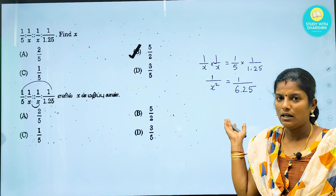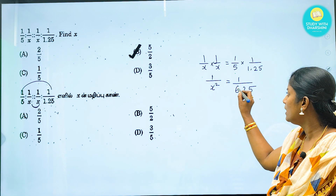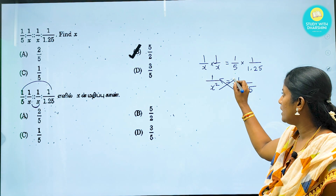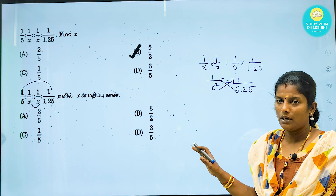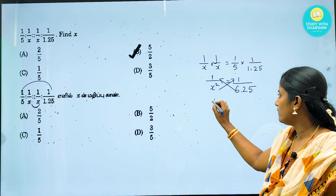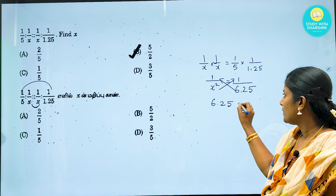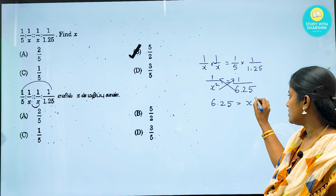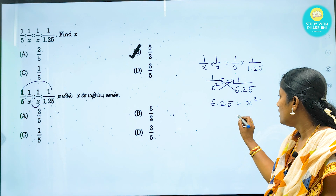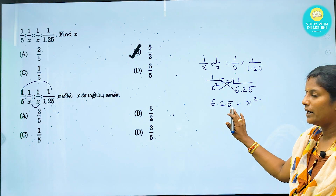So 1 by x into x squared equals 1 by 5 into 1.25. Here, 5 into 1.25 equals 6.25. Now we have two decimal points. So this gives us 1 by 6.25. We remove fractions by cross multiplication: 1 into 6.25 equals 6.25, and 1 into x squared equals x squared. So x squared equals 6.25.